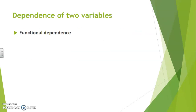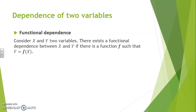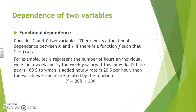The first type of dependence that exists between two variables is a functional dependence. Suppose x and y represent two variables. There exists a functional dependence between x and y if there is a function f such that y is the result of f(x). Typically, x is called the independent variable and y the dependent variable. For example, if x represents the number of hours an individual works in a week and y represents the weekly salary.